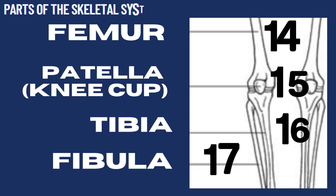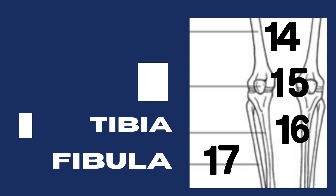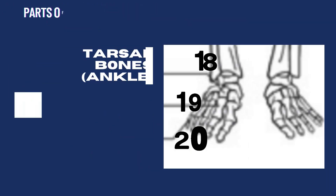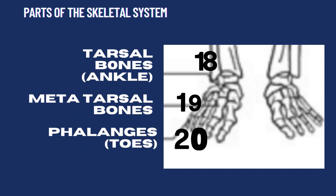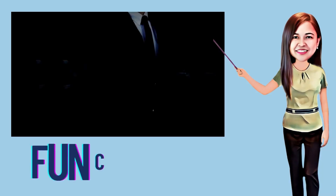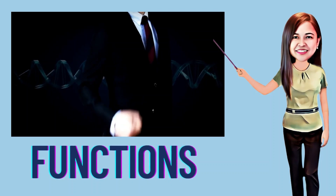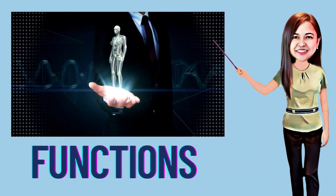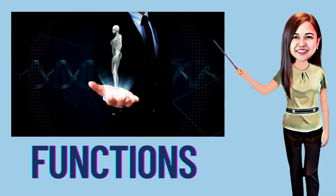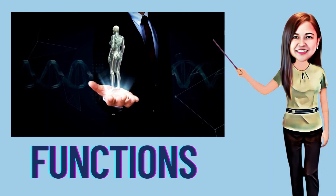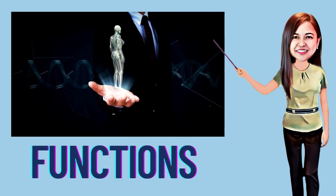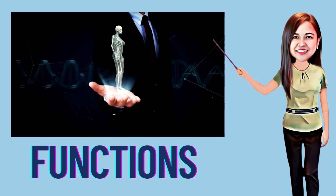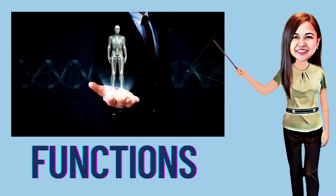Or at our toes. We also have the femur, patella, tibia, and fibula. Let us discuss the musculoskeletal system one by one.